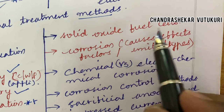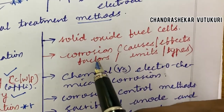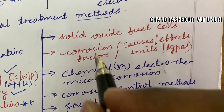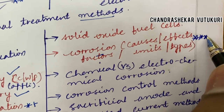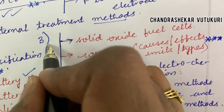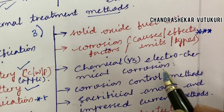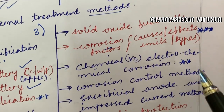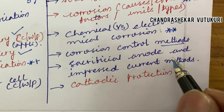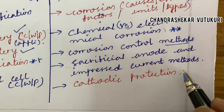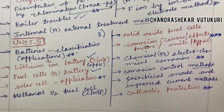Solid oxide fuel cells are also important. Corrosion — its causes, effects, factors, and types — may be a topmost question, which may occur in question 3, A, B, C, or D. Chemical versus electrochemical corrosion is important. Corrosion control methods, sacrificial anode method, impressed current method, and cathodic protection may be short questions.